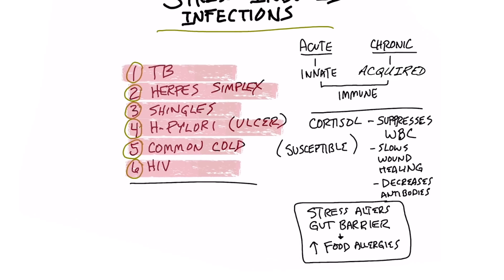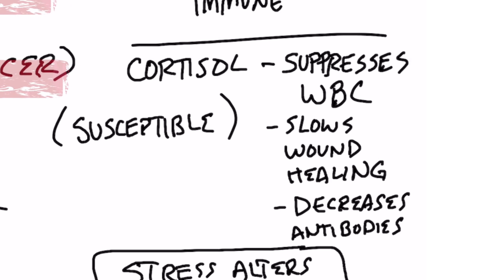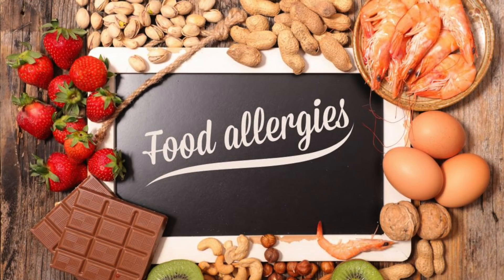When you go through stress, you activate cortisol — the stress hormone that suppresses white blood cells. This explains why under stress you don't have that immune barrier as much anymore, leaving you with a lowered immune system, more susceptible to pathogens, decreased antibodies, and more susceptible to food allergies. Stress actually alters the gut barrier, allowing pathogens to invade, create an immune reaction, and then create allergies.